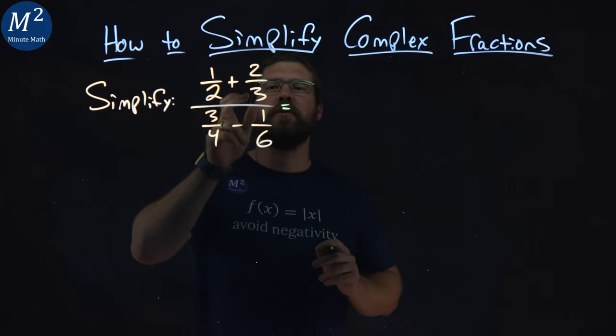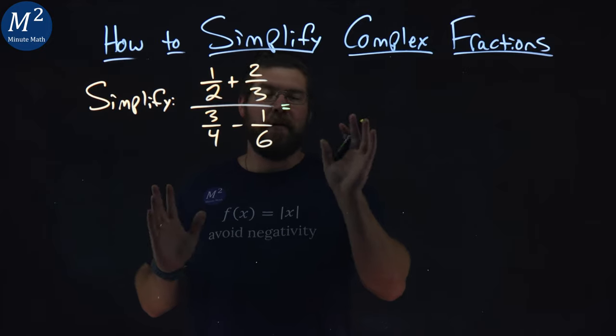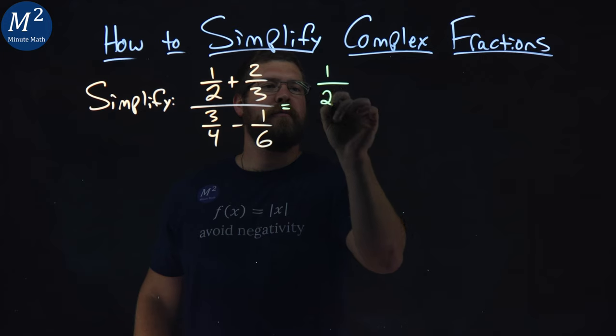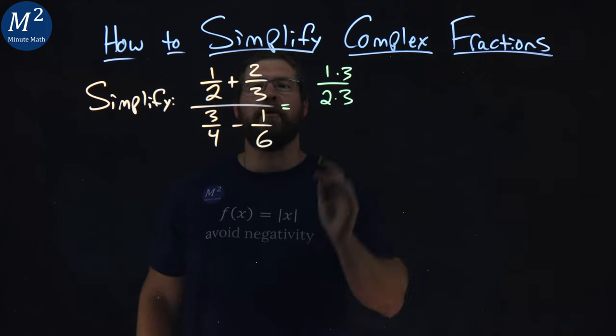1 half and 2 thirds, the 2 and 3 have a lowest common denominator of 6. So what I can do is 1 half becomes—2 times 3 gives me the 6, and multiply the numerator by 3.